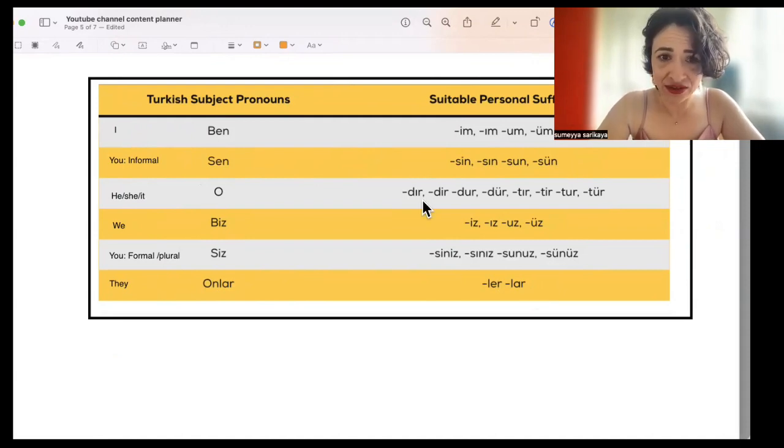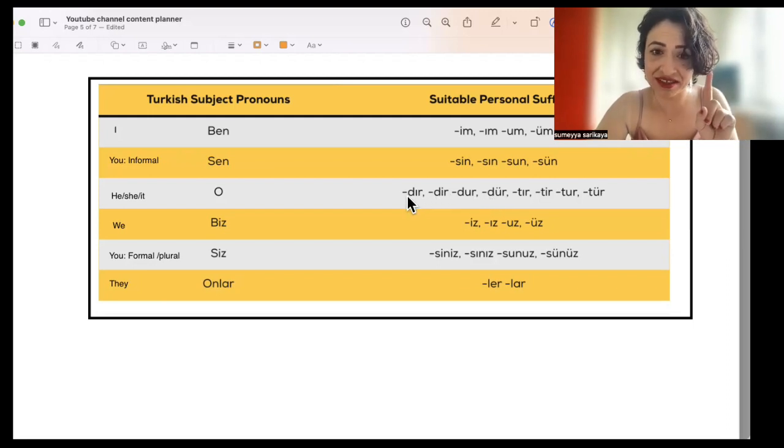And here you see there are two different consonant selections, either with the D sound or T sound. In Turkish, we have consonant harmony rule as well. But this is too much for now, so you can forget this. Don't worry about this for now. Let's focus on the vowel variation and how to choose which one is correct.